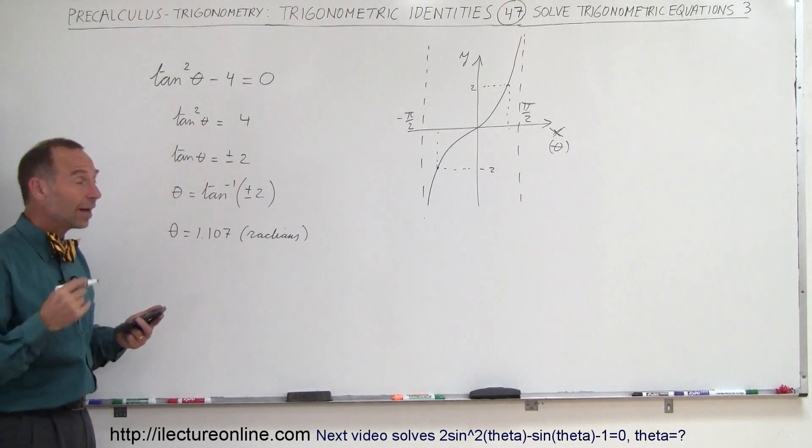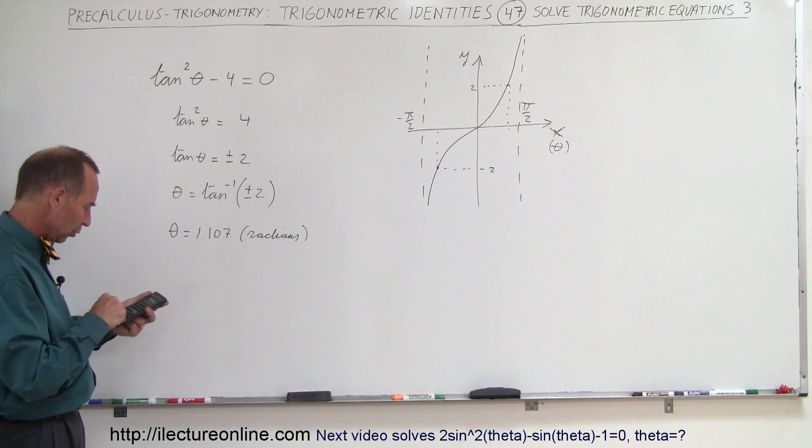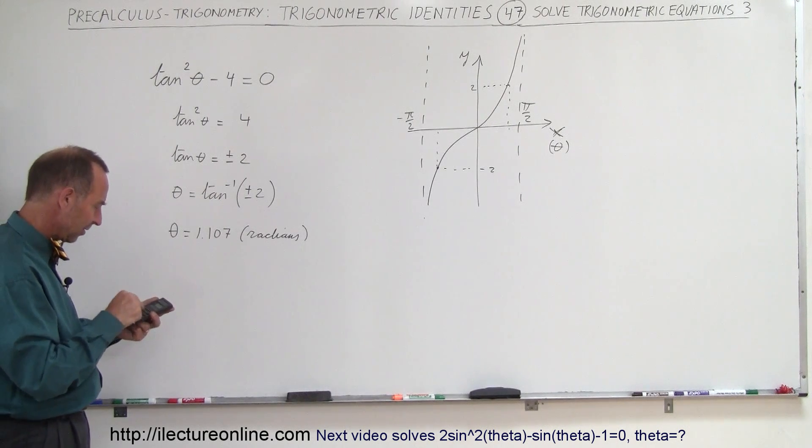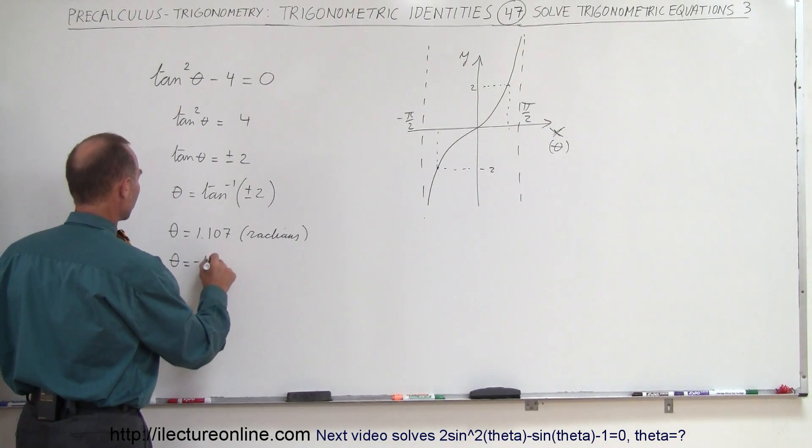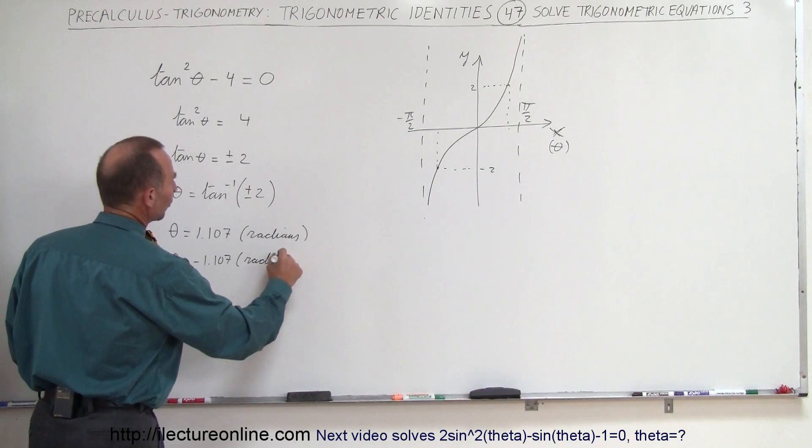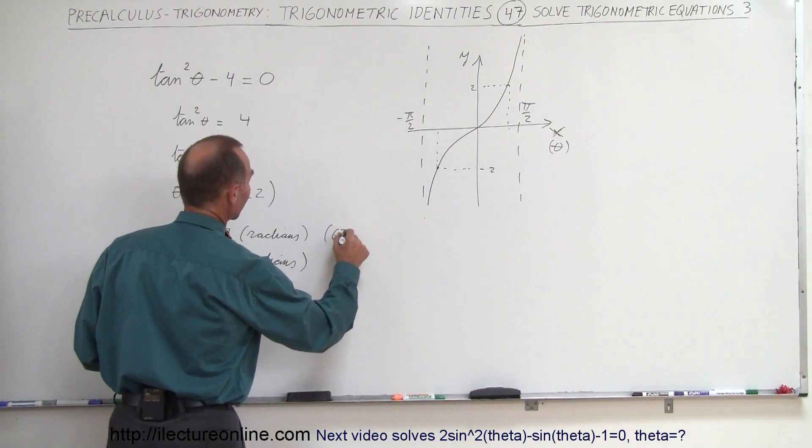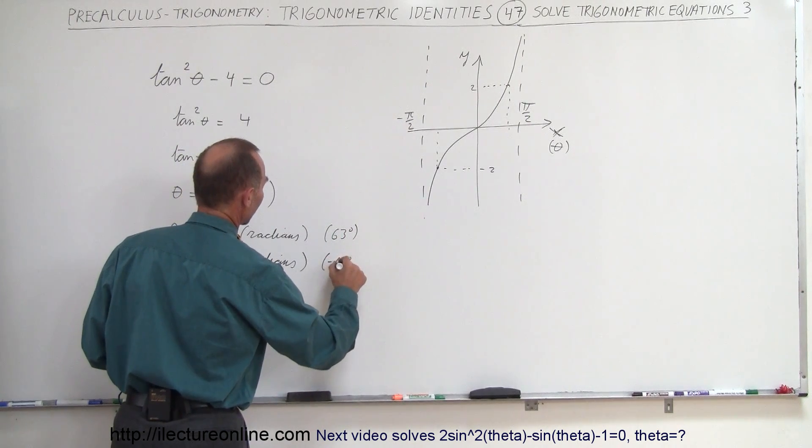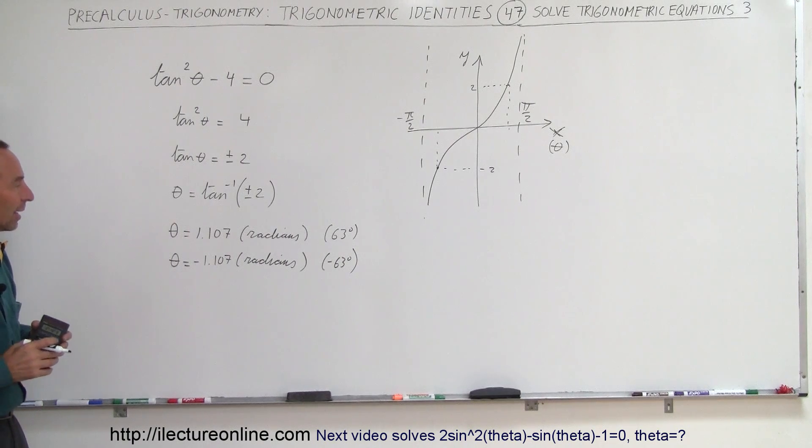And then if I use the other possibility, negative 2, so 2 negative, 2 negative and take the inverse tangent of that, I get theta is equal to minus 1.107 and of course that's also in radians. If you convert that to degrees, that will give you about 63 degrees or negative 63 degrees from the positive x-axis to the positive theta axis.